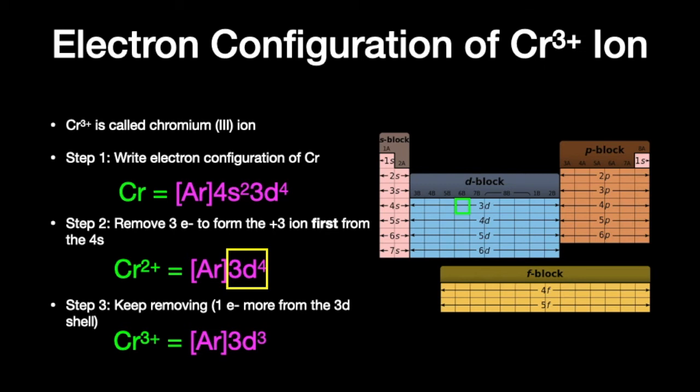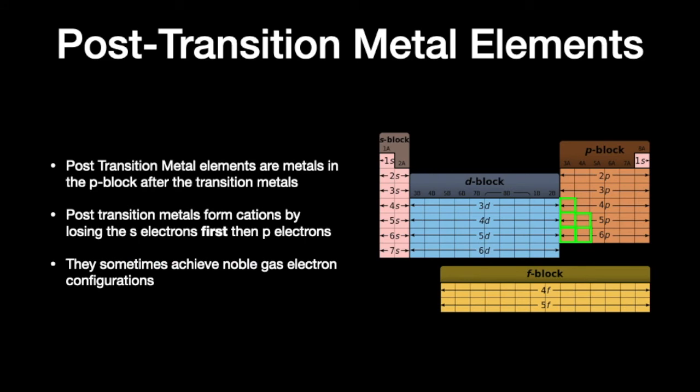Let's take a look at another section of the periodic table. Post-transition metals are elements found after the transition metals but right before the metalloids. These are metals, so they lose electrons to form cations, but you lose the S electrons first, then the P electrons — you don't touch the D electrons at all. They're considered core electrons closer to the nucleus, and these elements sometimes achieve noble gas electron configurations.